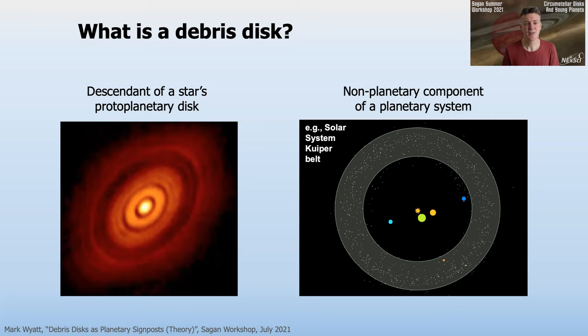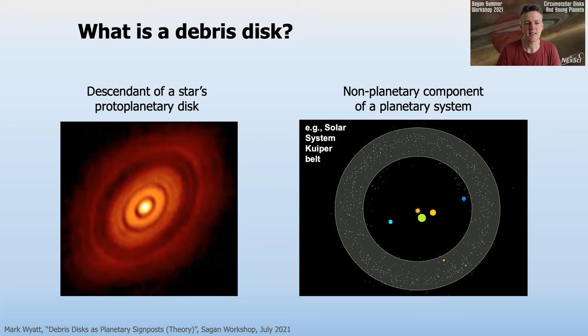So what is a debris disk? This is not a straightforward question, even for someone like myself who's been working in the field for over two decades. For those of you studying protoplanetary disks, it's probably natural to think of a debris disk as a descendant of a protoplanetary disk — those disks found around young stars with large amounts of gas and dust within them, within which planet formation processes are ongoing. A debris disk is found around older stars that also have dust and gas, but not as much.